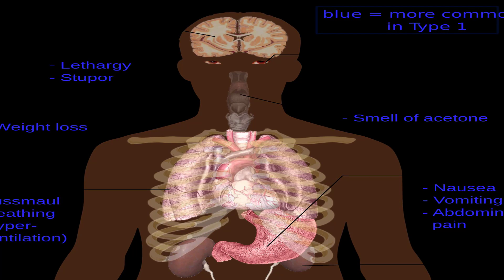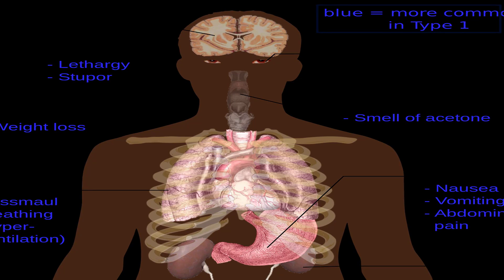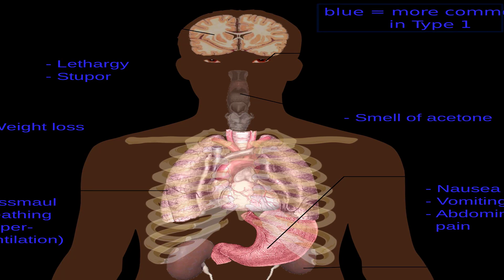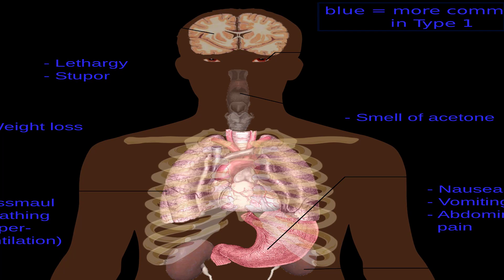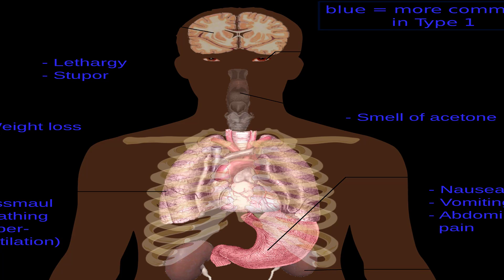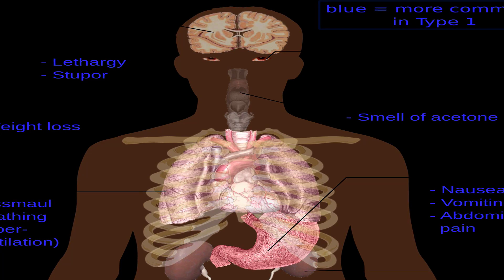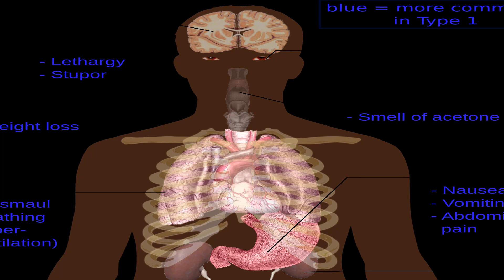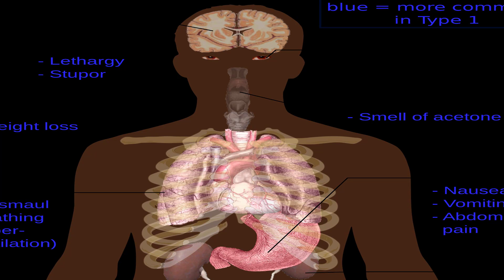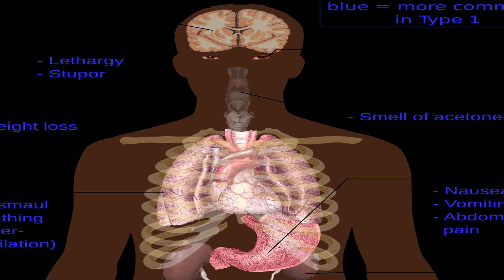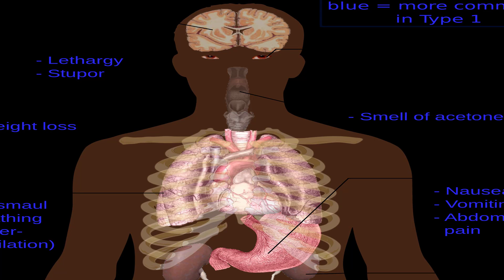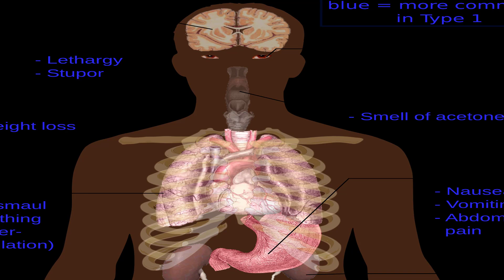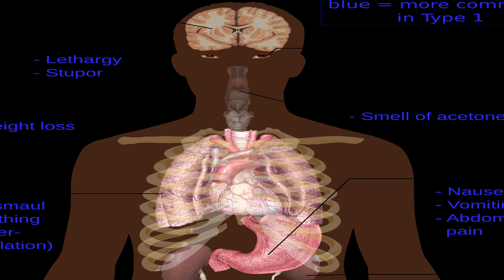Bowel bacteria may have properties that allow them to stick to the bladder. Spermicides may increase UTI risk by causing skin irritation, which makes it easier for bacteria to enter the bladder. Non-lubricated latex condoms may increase friction and irritate the skin during sexual intercourse, raising UTI risk — though condoms are important for reducing sexually transmitted infections; use water-based lubricant to help prevent irritation. Diaphragms may put pressure on a woman's urethra, decreasing bladder emptying. A decrease in estrogen levels after menopause changes the normal bacteria in the vagina, which can increase the risk of UTI.